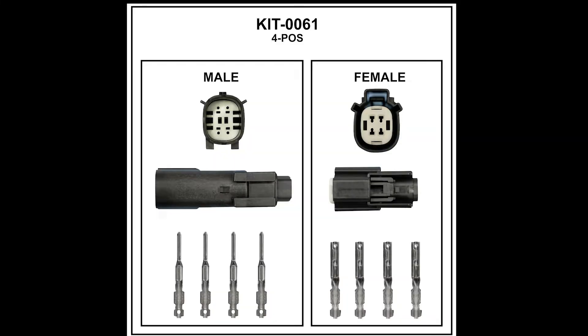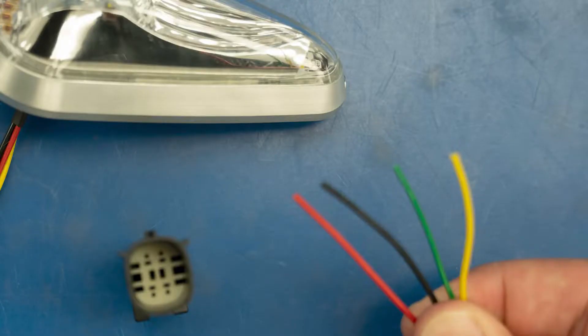Kit 61 includes a four position male connector with four pins and a female connector with four sockets. In this video we're showing how to wire our navigational nav strobe position light which is four wires.